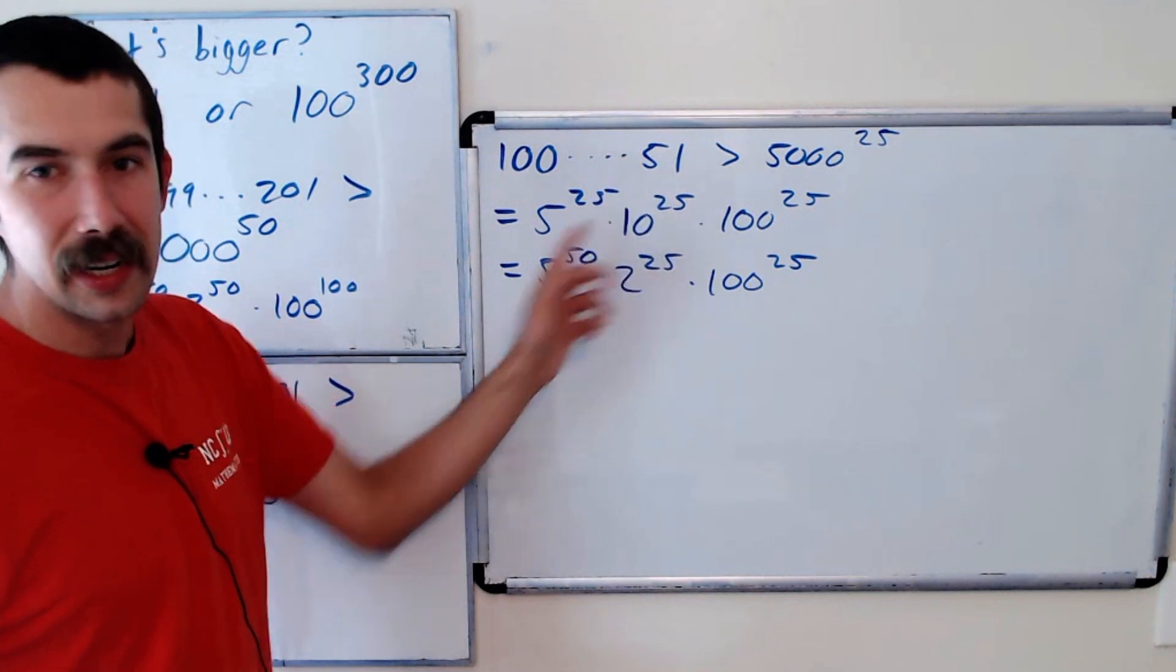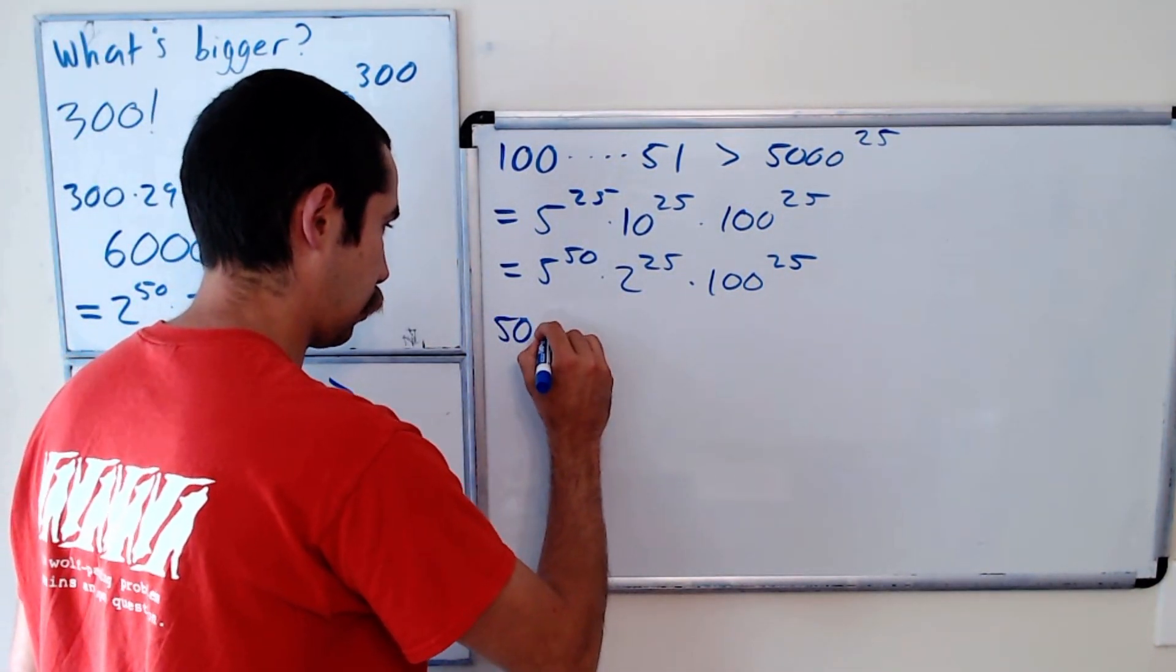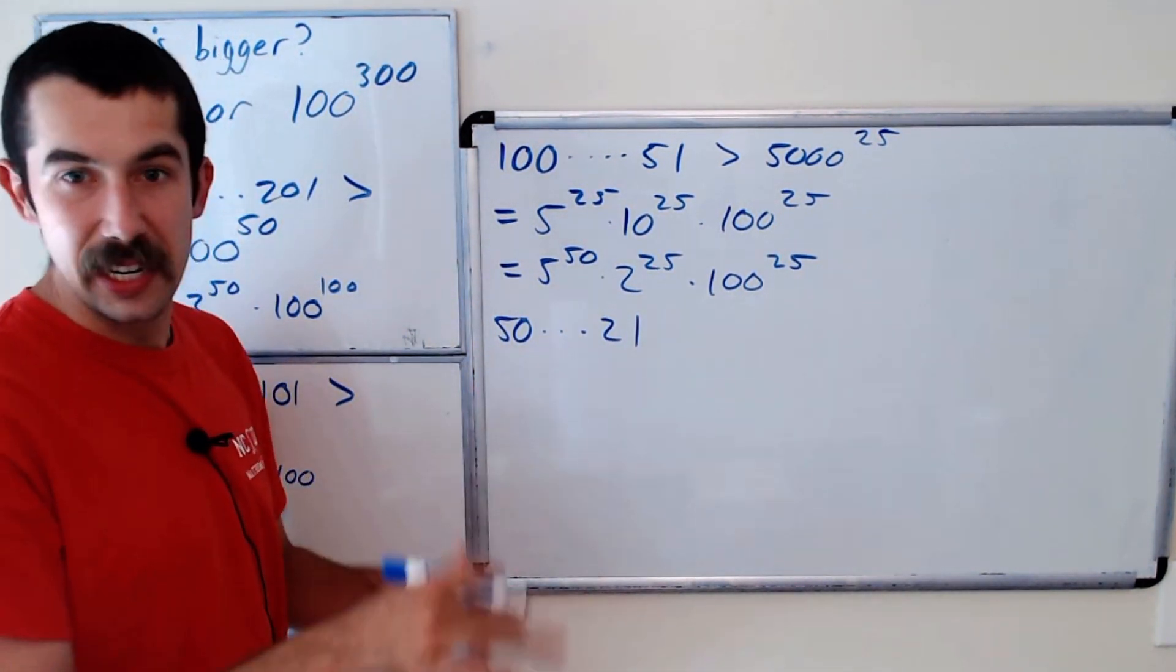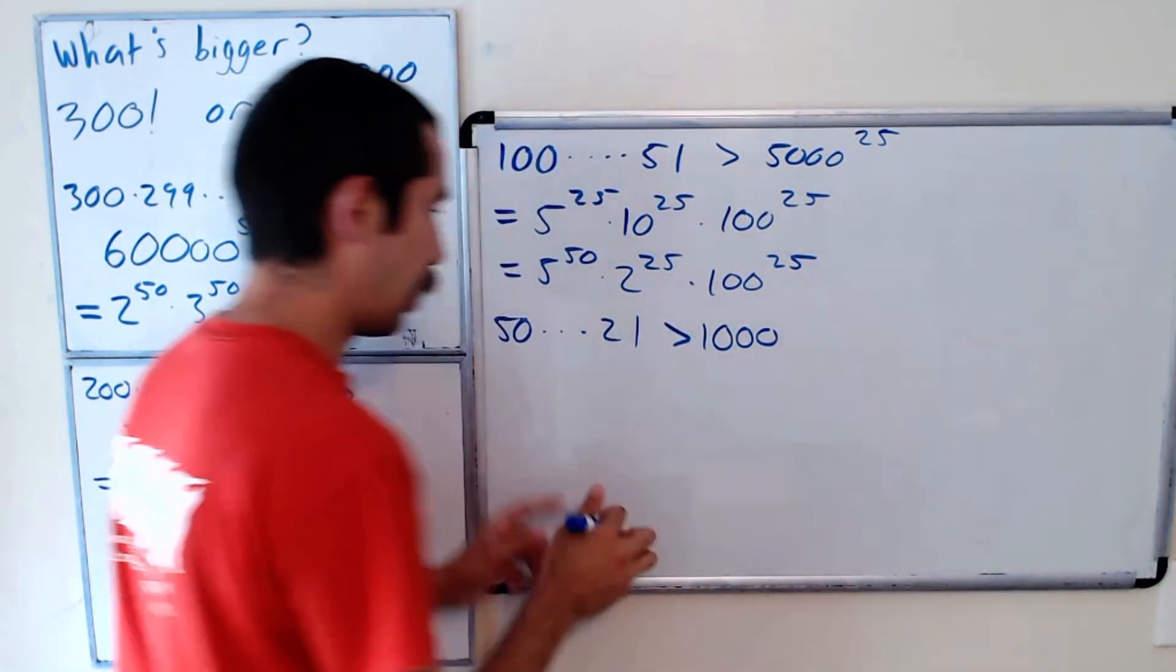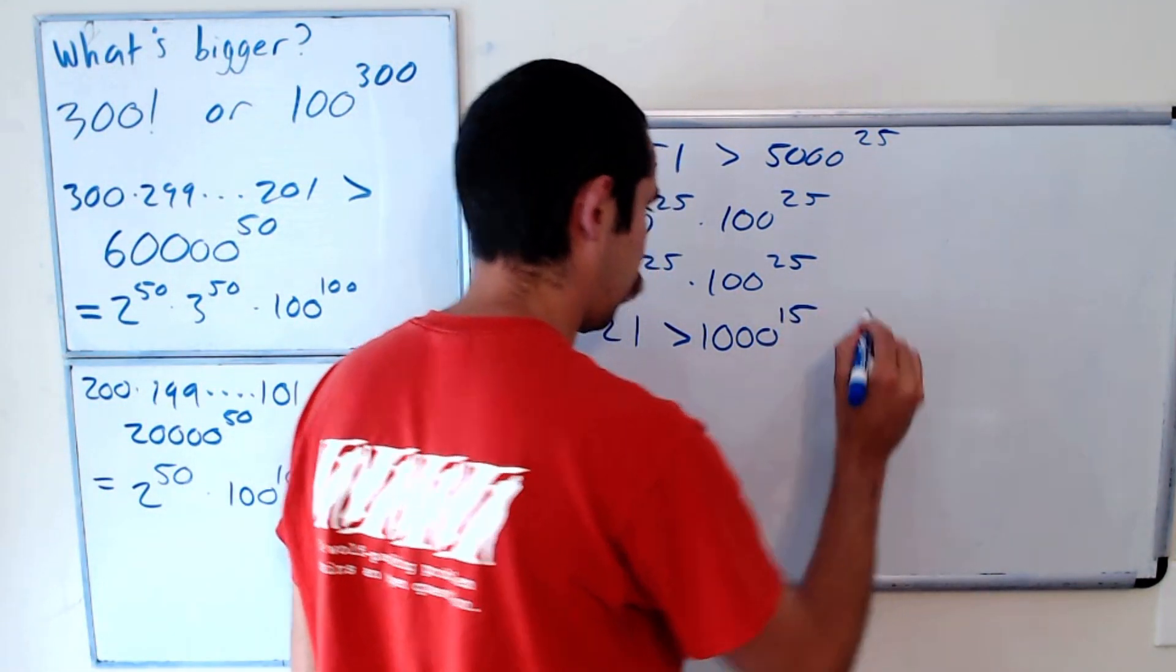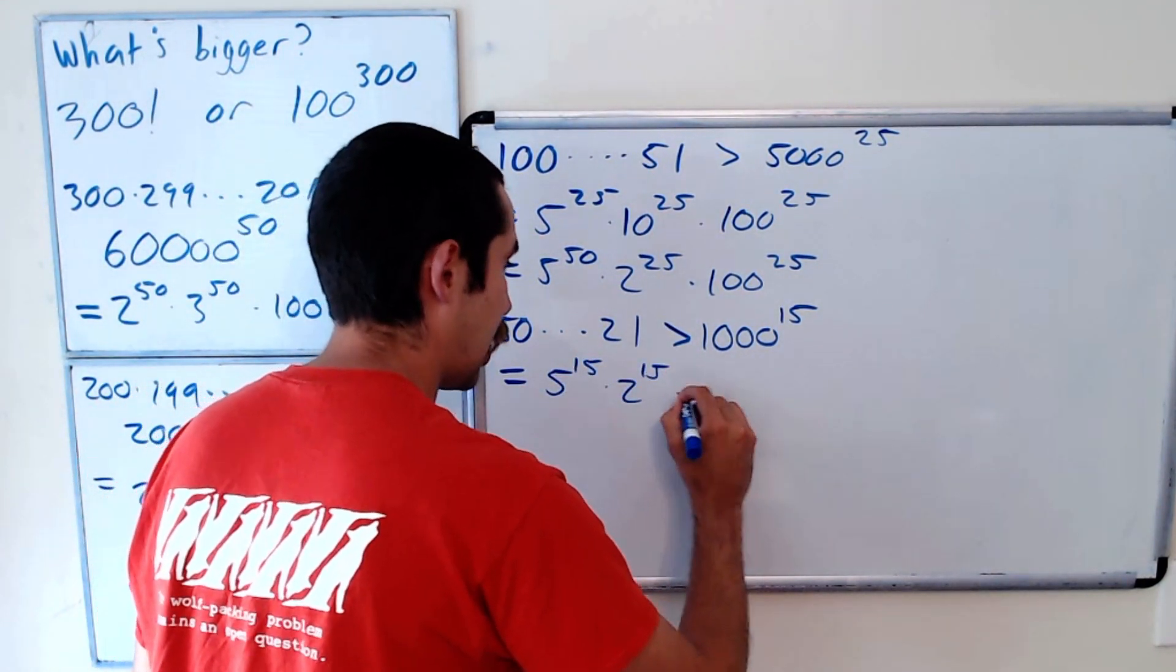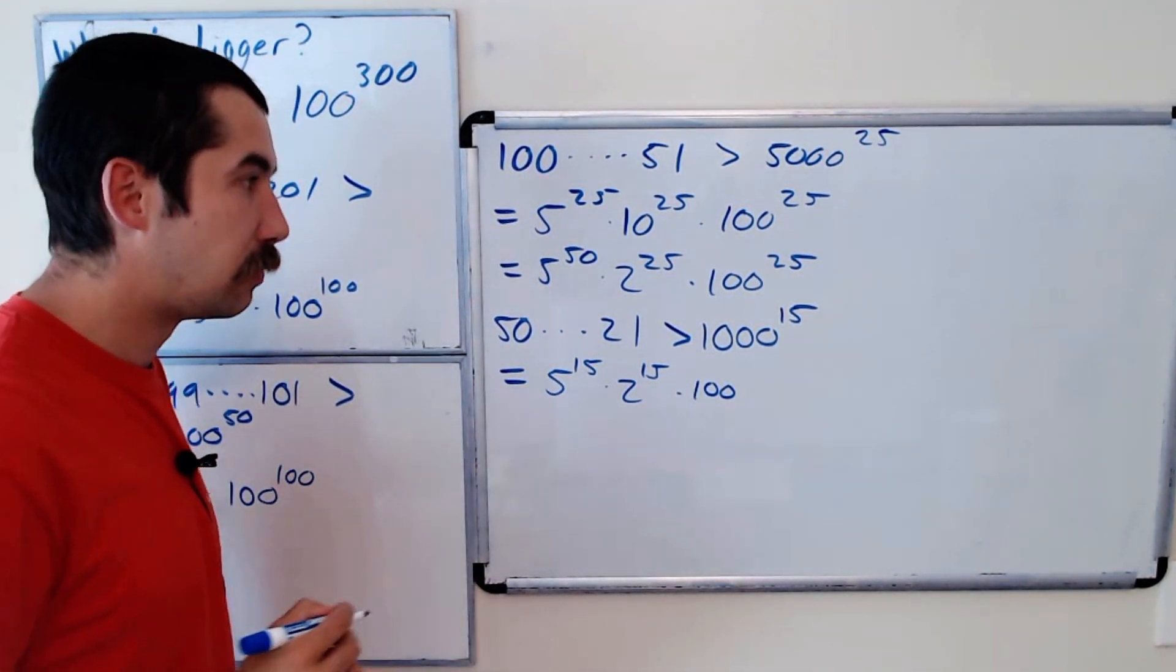All right, now let's go from 50 down to 21. Okay, 21 times 50 is about 1000. So this is greater than 1000. And there's going to be 15 pairs to the 15 power. Okay, and so what is this factorization? This is 5 to the 15 times 2 to the 15 times 100 to the 15.